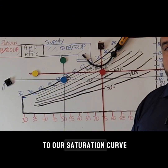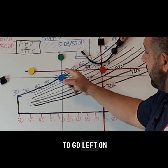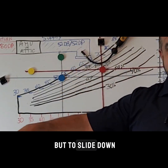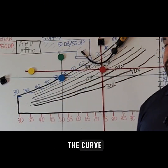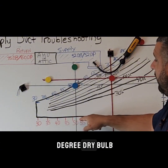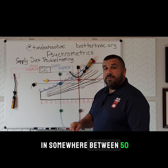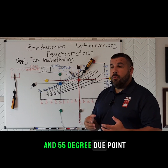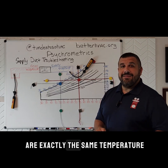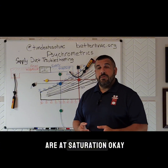Once we get to our saturation curve, and as we continue to go left on the chart, we have no choice but to slide down the curve until we get somewhere around 50 to 55 degree dry bulb on our supply side and somewhere between 50 to 55 degree dew point. When our dry bulb and our dew point are exactly the same temperature, that means that we are at saturation.